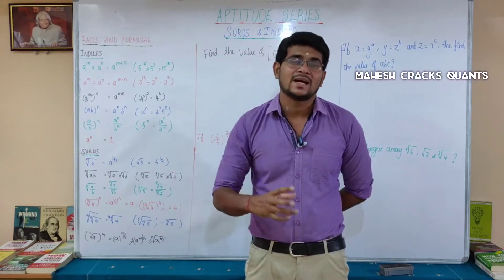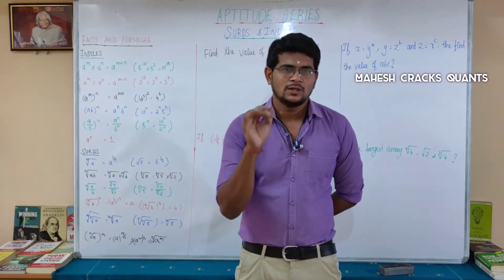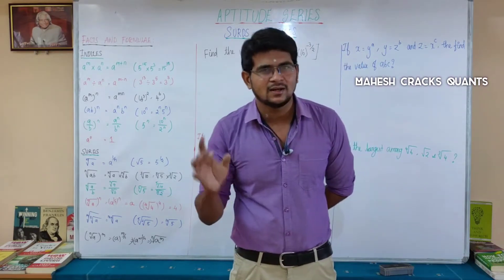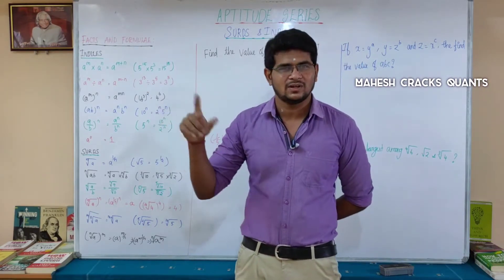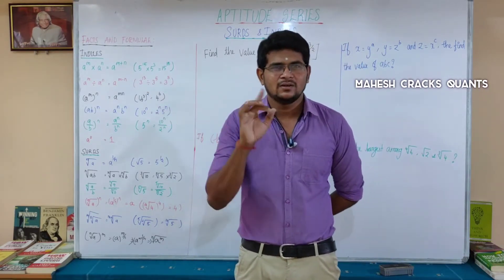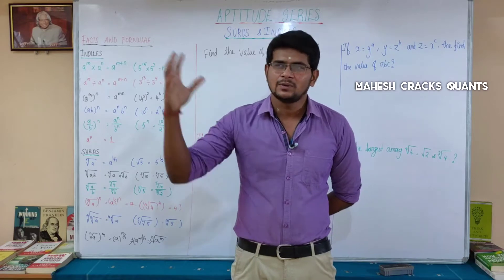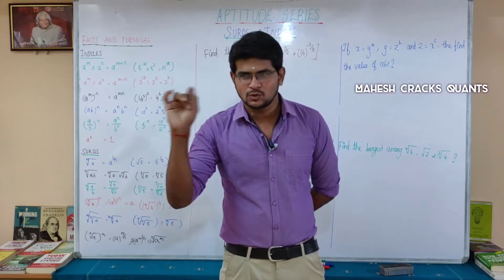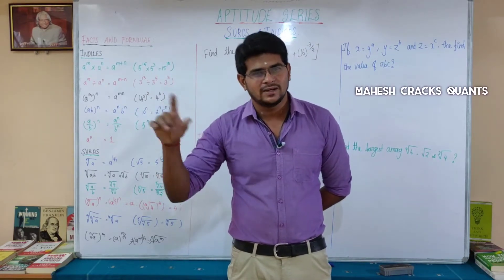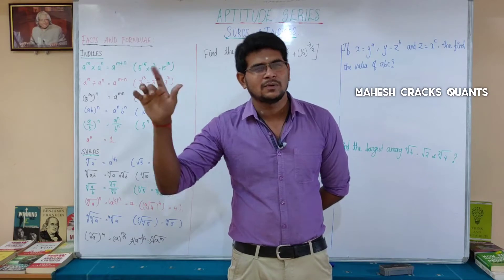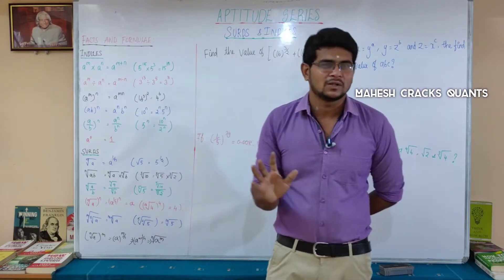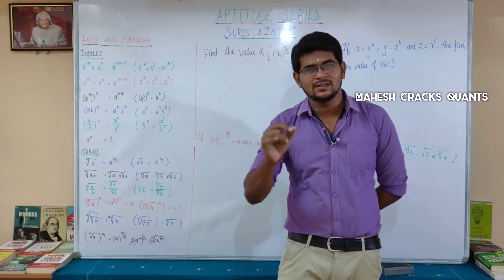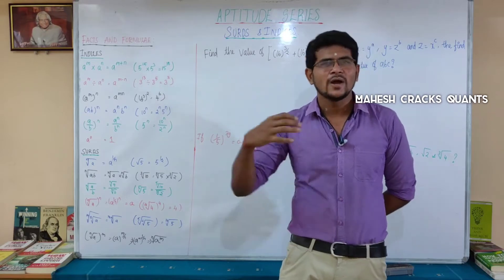The power is not always an integer; it can also be a fraction, which represents a root. For example, 5 power 1 by 2 is the square root of 5. And 5 power 3 by 2 is the square root of 5, whole to the power 3 (cube). That is what we are going to cover — the search and Indices.